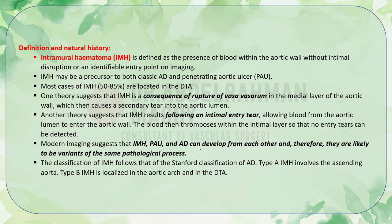As regards intramural hematoma, it is defined as the presence of blood within the aortic wall without an intimal disruption or an identifiable entry point on imaging. IMH can be a precursor to both classic aortic dissection and penetrating aortic ulcer, and most cases are located in the descending thoracic aorta. One theory suggests that IMH is a consequence of rupture of the vasa vasorum in the medial layer of the aortic wall, which causes a secondary tear into the aortic lumen.